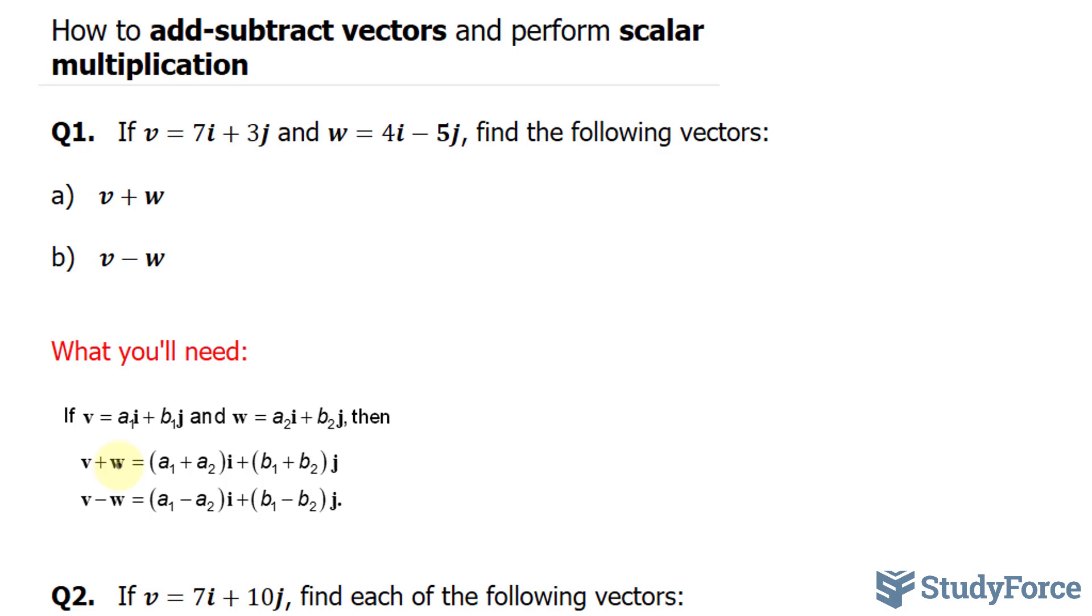Let me show you what I mean. For a, I'll be taking 7 plus 4. So our resultant vector, which I'll represent as r, is equal to 7 plus 4 plus 3 plus negative 5.